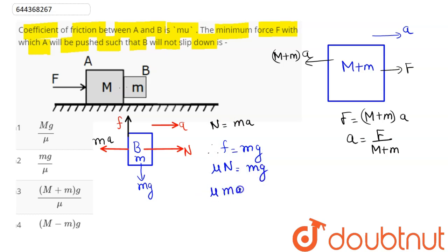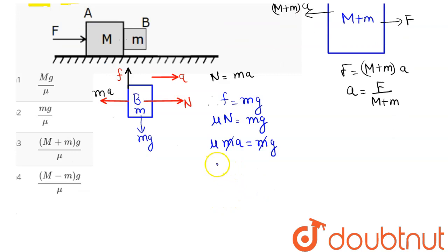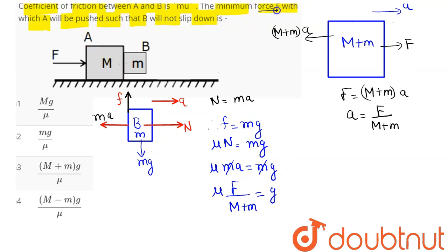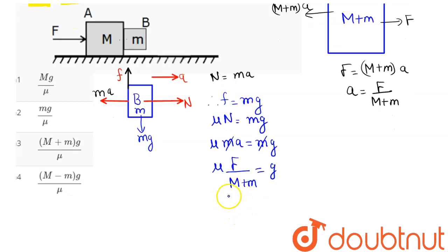So we have the value of a written as F divided by (M + m). So μ into F divided by (M + m) is equal to g. Hence the minimum value of force F can be written as (M + m) into g divided by μ.